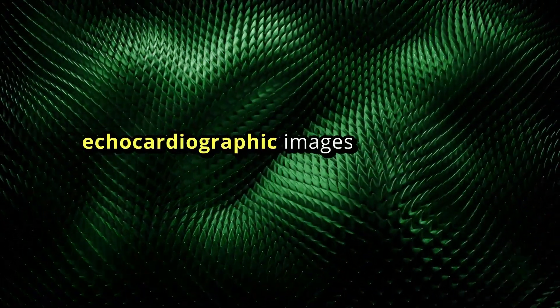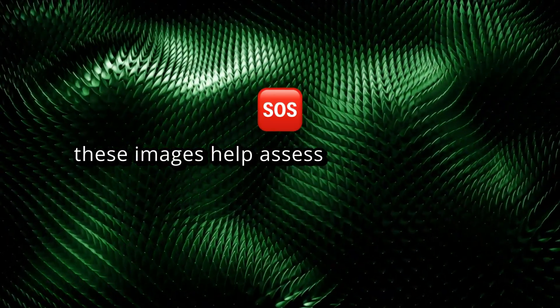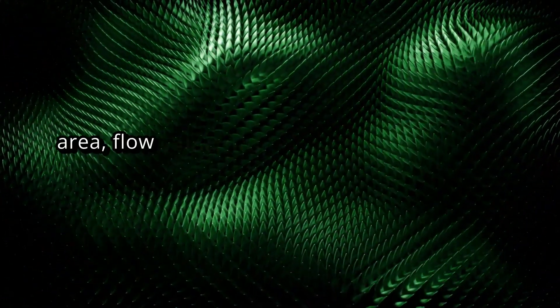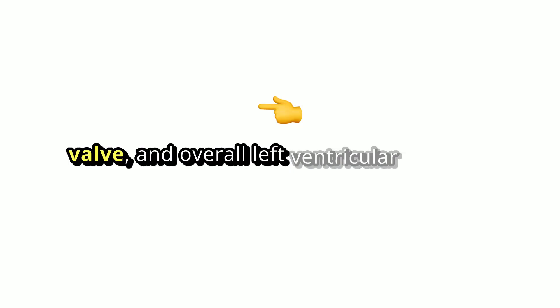Throughout the test, echocardiographic images are taken at baseline and at different stages of dobutamine infusion. These images help assess the aortic valve area, flow velocities, pressure gradients across the valve, and overall left ventricular function.